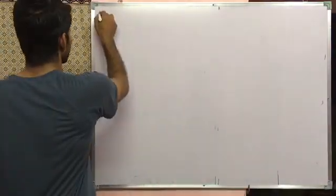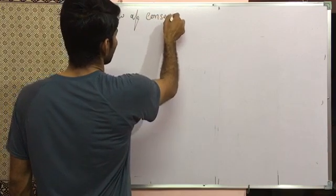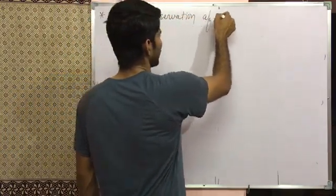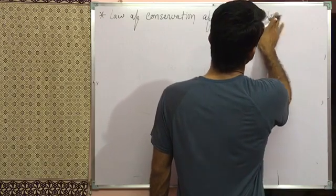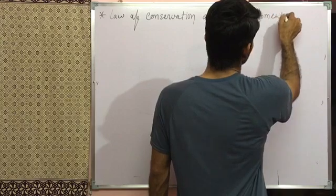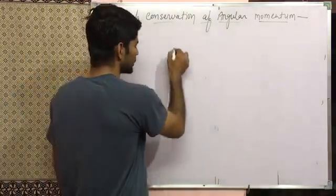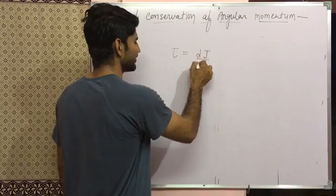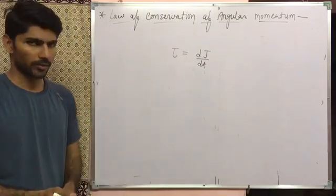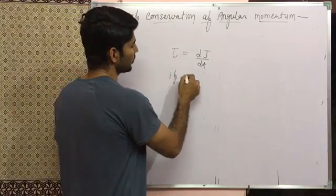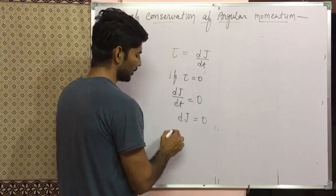Now our new topic is the law of conservation of angular momentum. We know that torque is given by τ = dJ/dt — torque is the rate of change of angular momentum. If the external torque is zero, then dJ/dt = 0, which means dJ = 0, meaning there is no change in angular momentum.